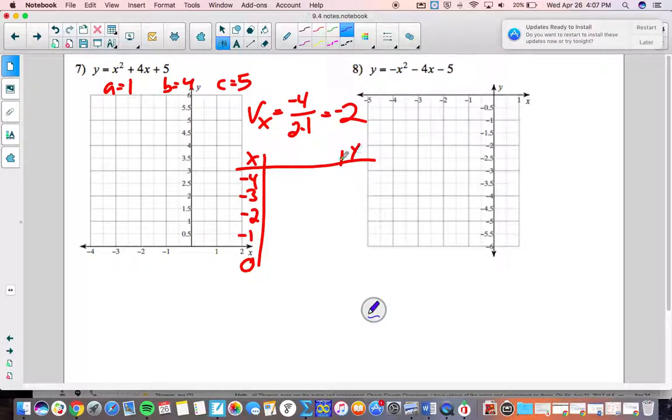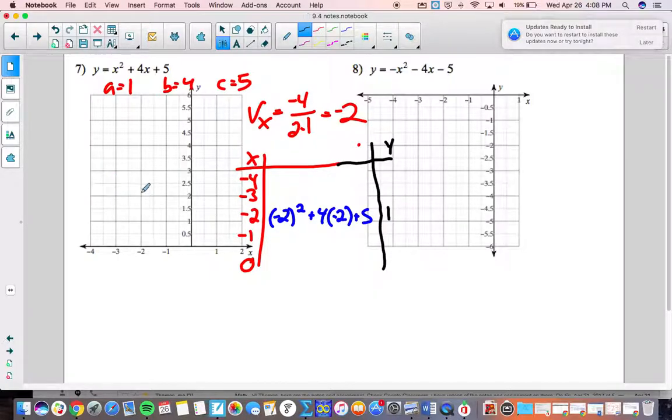So we get negative 2 squared plus 4 times negative 2 plus 5, and when you do that you should get 1. So we can plot the point negative 2 and 1.